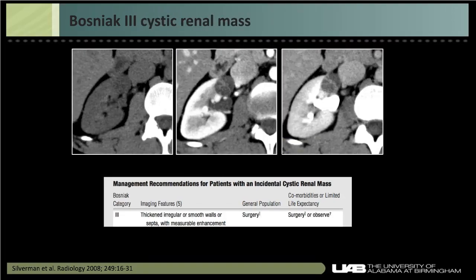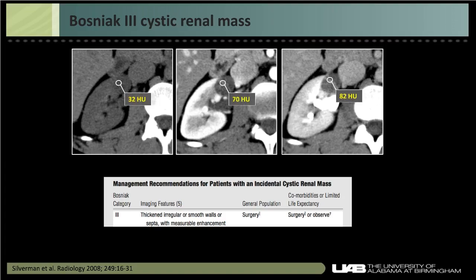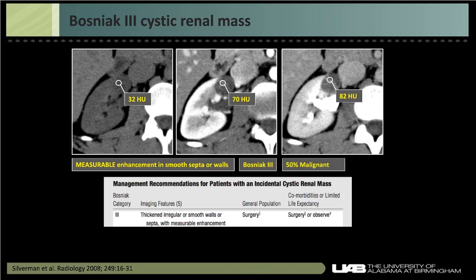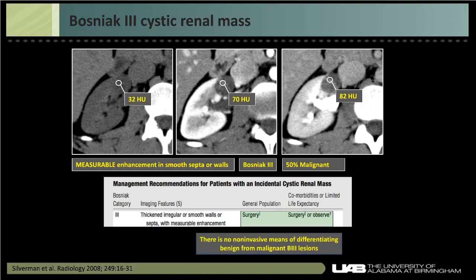Bosniak 3 renal cysts have measurable enhancing components in walls or septa. For example, a thickened septation measuring 32 Hounsfield units on non-contrast and 82 on nephrographic phase — an increase of 50 Hounsfield units, well above the 20-unit threshold — confirms measurable enhancement. About 50% of Bosniak 3 lesions are malignant. There is no non-invasive means of differentiating benign from malignant Bosniak 3 renal lesions, which is a significant challenge.